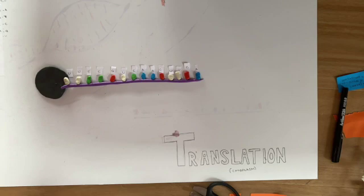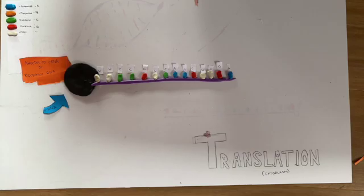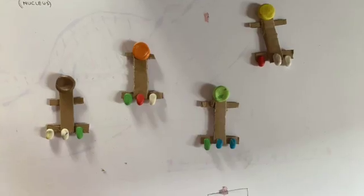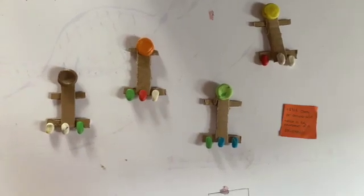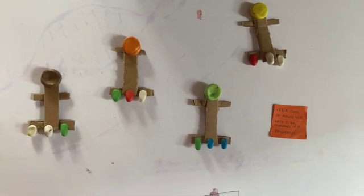This strand of RNA will then attach to a ribosome, which will subsequently attach to rRNA, or ribosomal RNA. In the cytoplasm, there are many tRNA, or transfer RNA, molecules available that carry an amino acid, which is the monomer for a polypeptide.